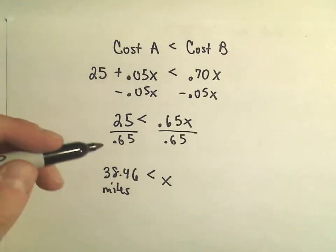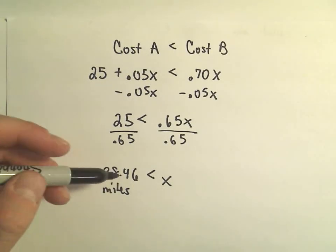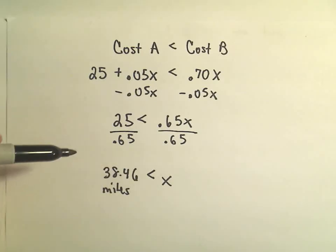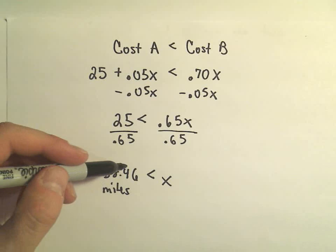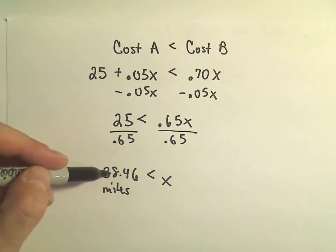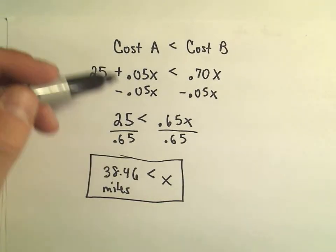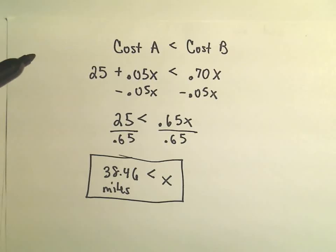So suppose they charge you based on the fraction of the mile that you drive. It says basically if you drive a little bit over 38 miles, almost 38.5 miles, if you drive more than that in one day, it's going to be cheaper to use option A.